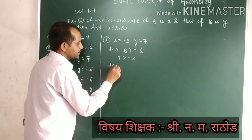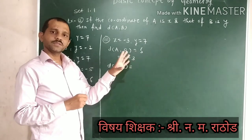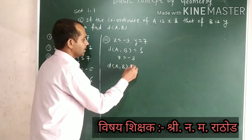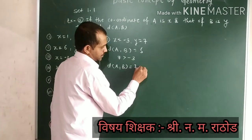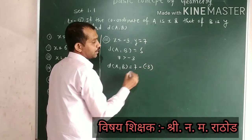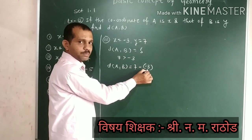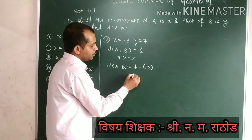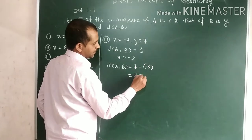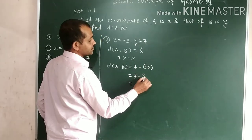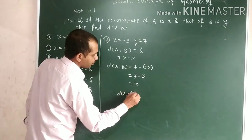Now we have to find the distance between points A and B. The distance between the two numbers: 7 minus minus 3 equals 7 plus 3 equals 10. Therefore, the distance between points A and B is 10.